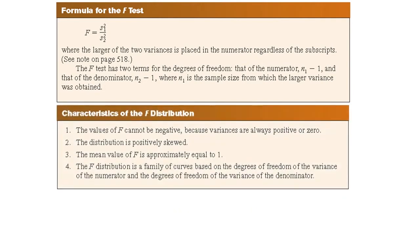The characteristics of the F-distribution are: the values of F cannot be negative — of course, it cannot be negative because we are talking about variance, which is squared and always positive or zero. The distribution is positively skewed. The mean value of F is approximately equal to 1, and the F-distribution is a family of curves based on the degrees of freedom of the variance of the numerator and the degrees of freedom of the denominator.